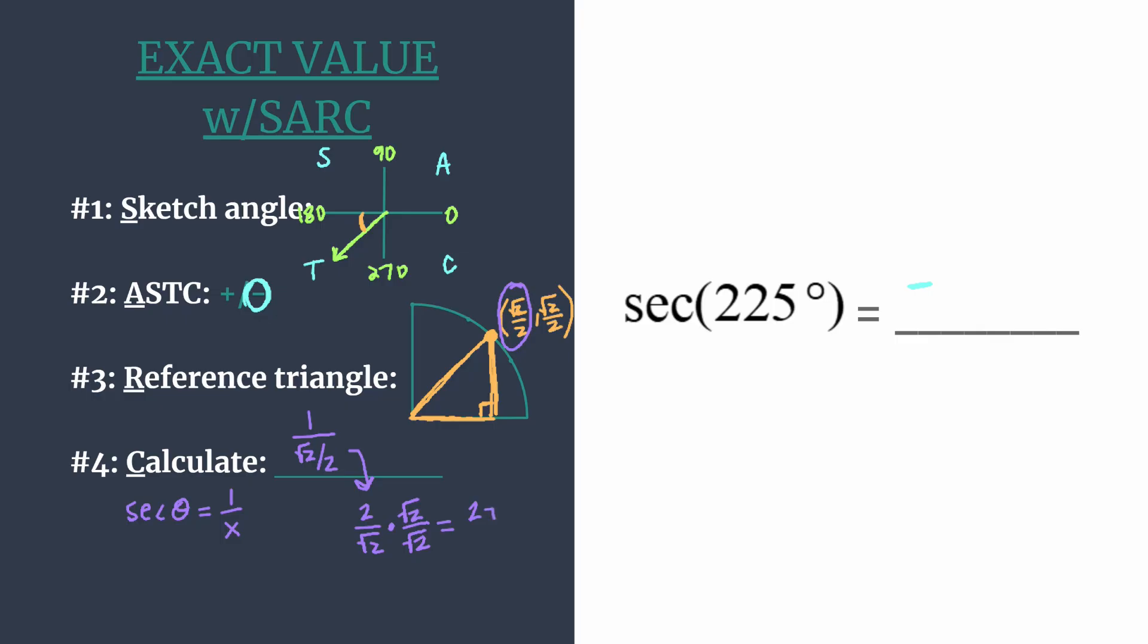So we get 2 root 2 over 2. Those 2's are a common factor so they cancel out. Our value is root 2. So the secant of 225, we already said it was negative, it's going to be negative square root of 2.